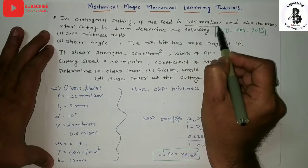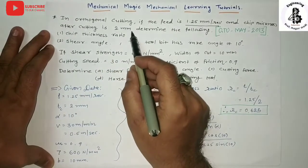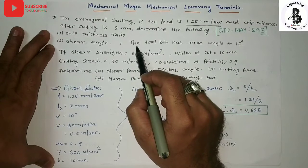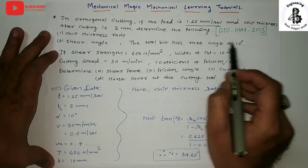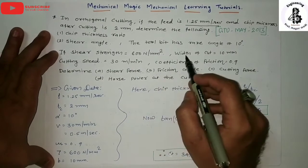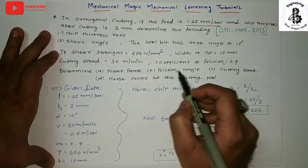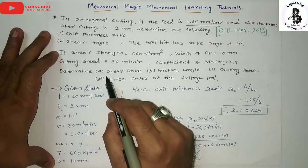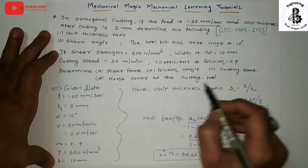In orthogonal cutting, if the feed is 1.25 mm per revolution and chip thickness after cutting is 2 mm, determine the following: chip thickness ratio, shear angle. Further data: the tool has a rake angle of 10 degrees, shear strength of the material is 600 Newton per mm square, width of cut is 10 mm, cutting speed is 30 meters per minute, and coefficient of friction is 0.9. Determine shear force, friction angle, cutting force, and horsepower at the cutting tool.